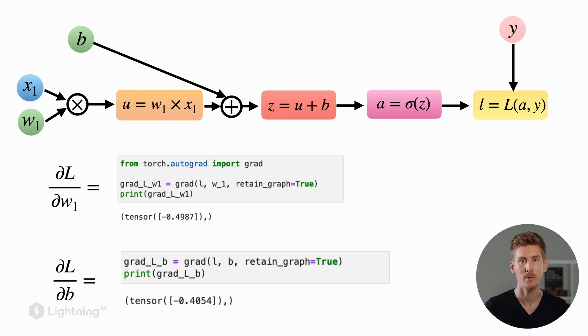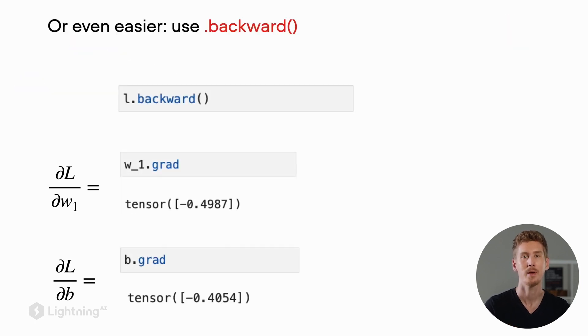Instead of using the grad function manually like we did before, we can actually compute the partial derivatives or gradient of the loss with one backward call. Previously, we built up the logistic regression computation graph up to the loss. Then once we have the loss computation for the given training example, we can call .backward on the loss to compute these gradients automatically.